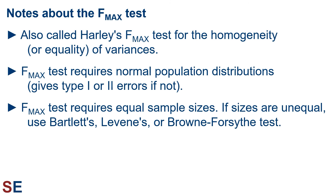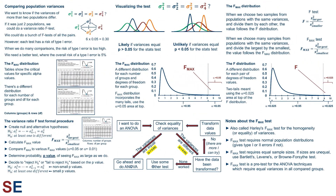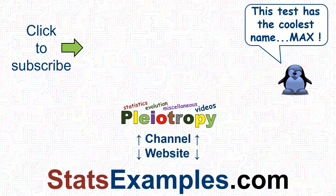Tests for equality of multiple variances are most often done before using an ANOVA technique, because these methods require equal variances for all the groups they compare. I hope you found this introduction to the F-max test useful. There's a companion video that walks through several examples step-by-step, and there's a PDF of this content on the Stats Examples website. Please share, like, or subscribe if you found this video useful.